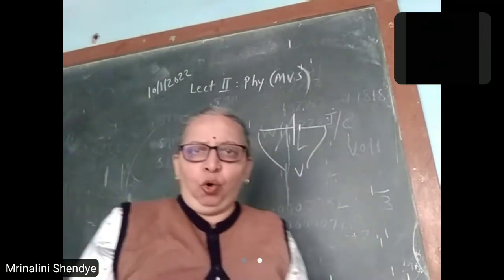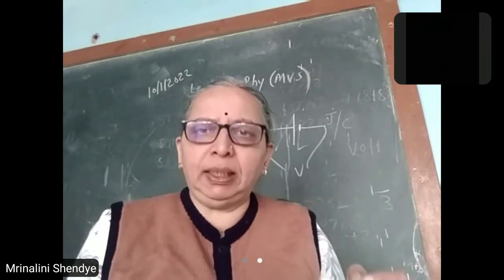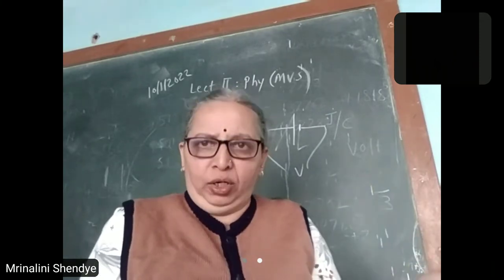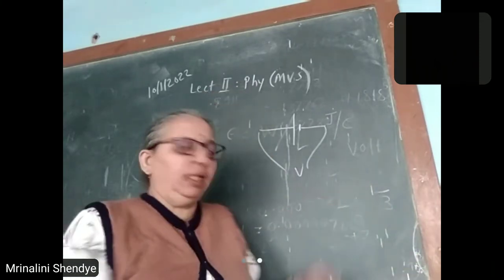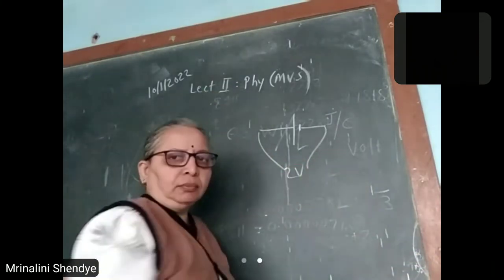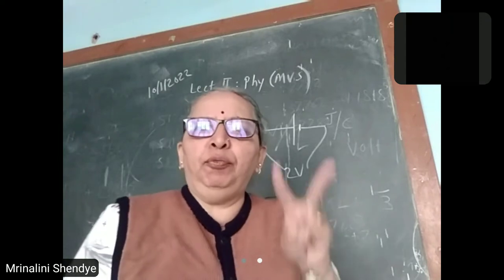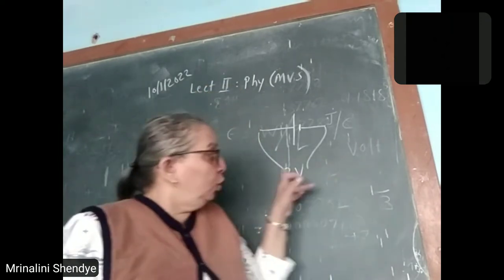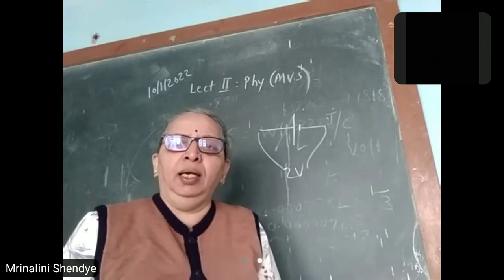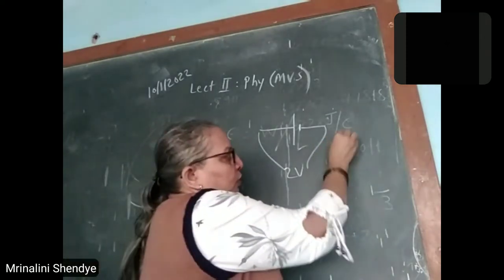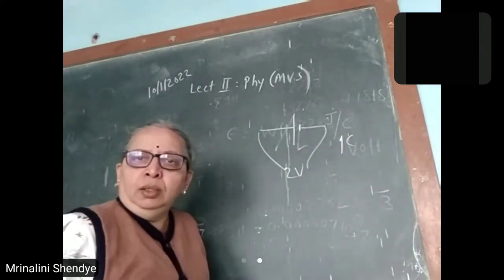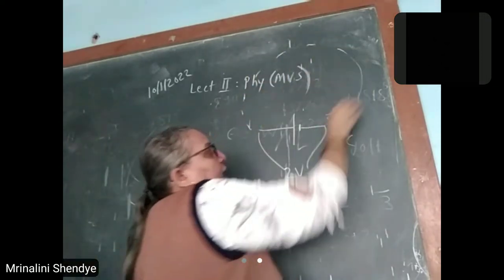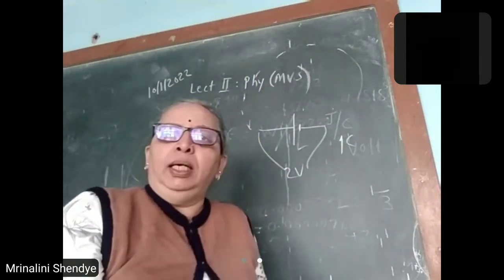That will be recorded in Volts. For practical purposes, EMF is measured in terms of Volts. Suppose EMF is 2 Volts. It means the source provides 2 Joules of energy for 1 Coulomb charge to circulate once round the closed external circuit.